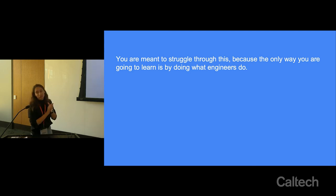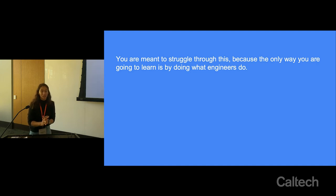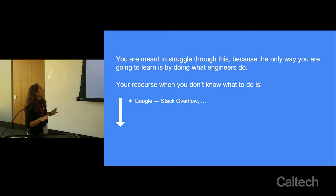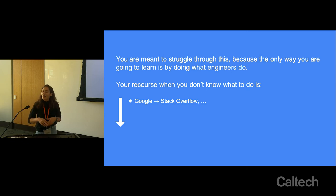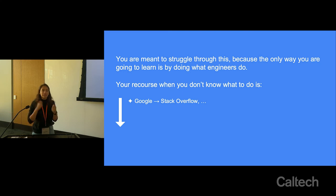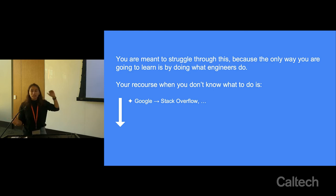You are meant to struggle through this because that's the only way you'll learn — it's what engineers and coders do. When you don't know what to do, the recourse we'd like you to follow is: first, Google things and look at Stack Overflow. If not Stack Overflow, there are other resources like Geeks for Geeks. Part of what we'd like you to learn is how to identify the right search terms to figure out what's going wrong — being able to work with available resources is one of the most important things you'll take away from this class.